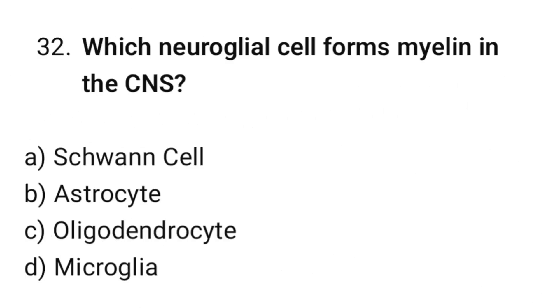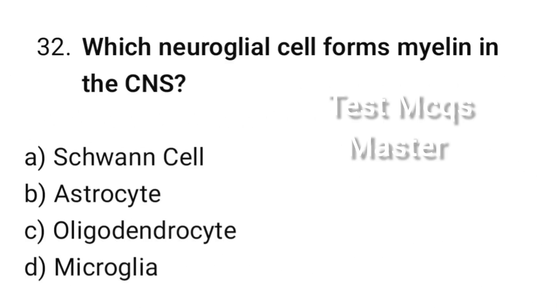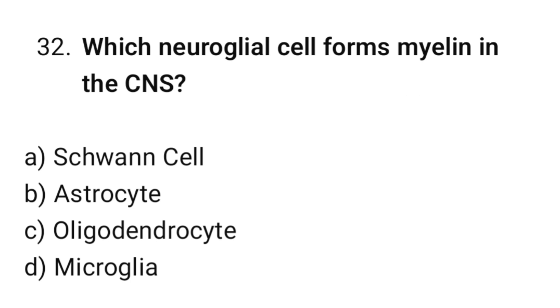Question number 32: Which neuroglial cell forms myelin in the CNS? The correct option is C. Oligodendrocytes.